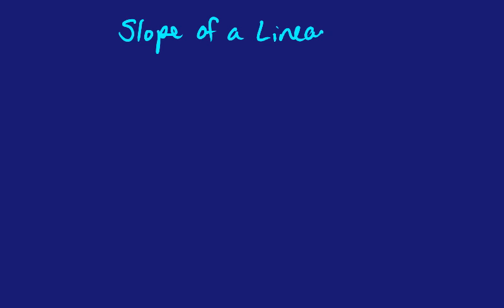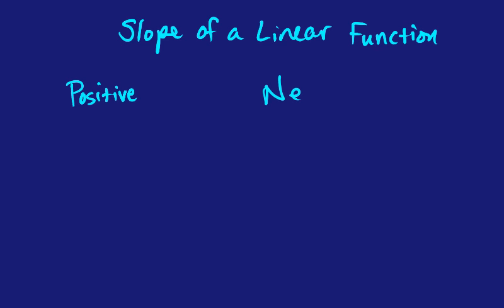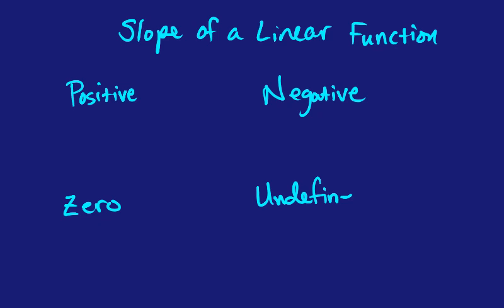This video is on the slope of a linear function. To start off, there are four types of slope that you may see in your class: the first one would be a positive sloped line, the next one would be a negative sloped line, then you might see a slope of zero, and then you might see an undefined slope.